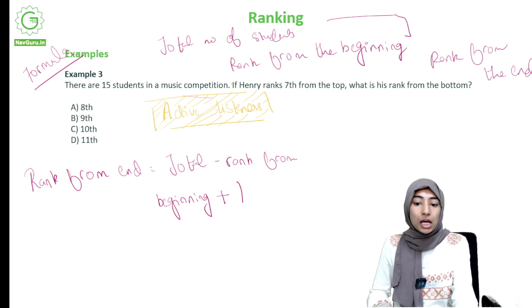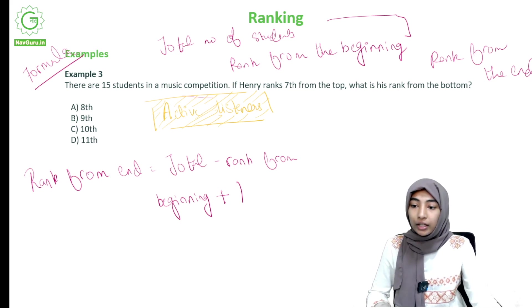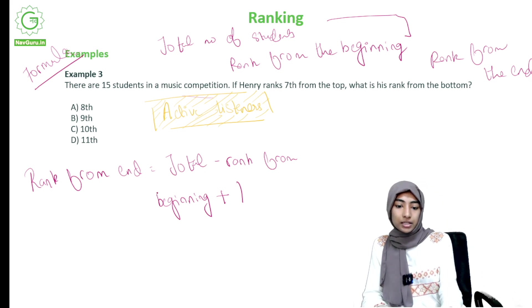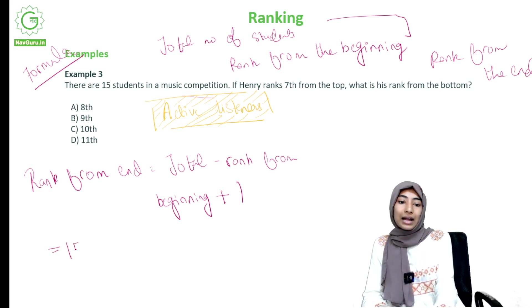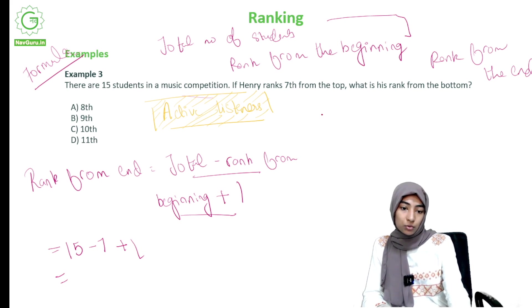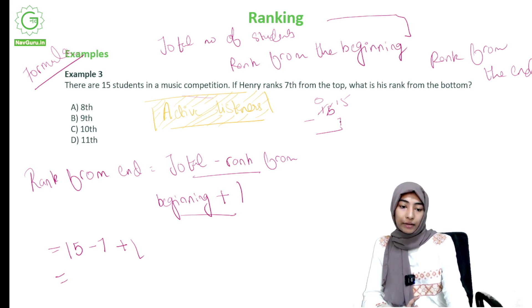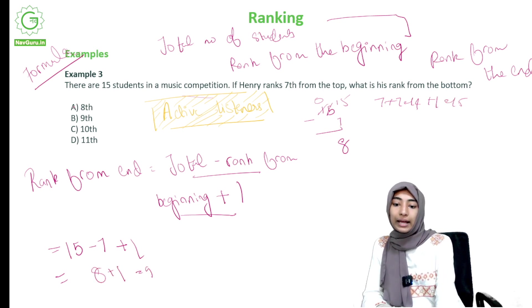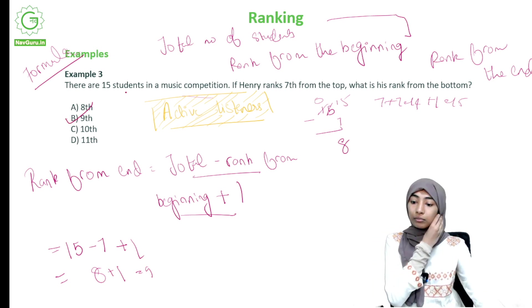So for Henry: total is 15, rank from top is 7. Using the formula: 15 minus 7 is 8, plus 1 is 9. Henry is at the 9th rank from the bottom.